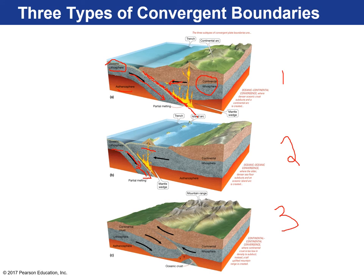There's also a scenario where continental lithosphere collides with continental lithosphere. When this happens, neither subducts because they're too buoyant. Think of the asthenosphere as like water in a pool, and continental lithosphere as a boogie board — it floats to the top because it's less dense. So when two continental lithospheres collide, it's like two cars having a head-on collision where the hoods crumple upwards. That's what creates mountain ranges.